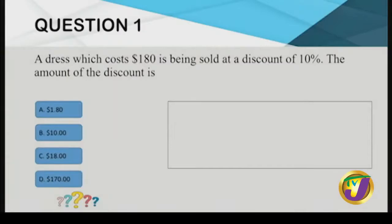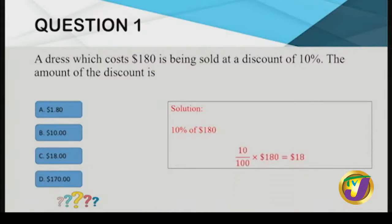Can we eliminate any answers? 10% is one-tenth of 180, so $170 can be eliminated because that is not just 10% of 180. Our calculation: 10% of $180 is one-tenth of 180, which gives us a discount of $18.